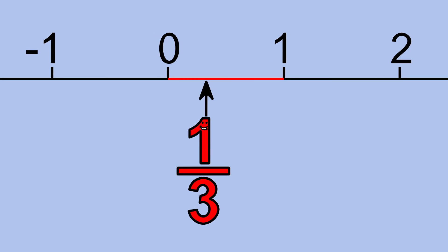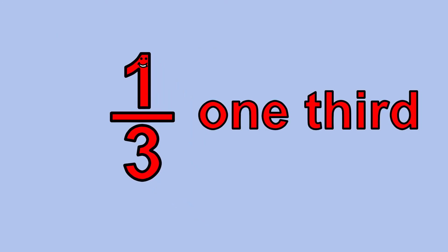If you divide the line segment between 0 and 1 into 3 equal sized parts, I'm at the end of the first part. That's why they call me 1 3rd.